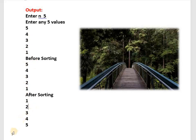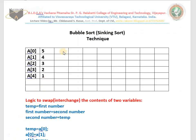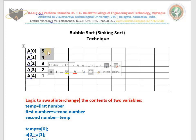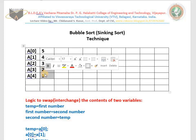How to arrange these values in ascending order? We use bubble sort technique — let me explain the technique first. Assume you entered 5 values: 5, 4, 3, 2, 1, stored in array positions a[0] through a[4]. We compare two consecutive values. First I compare 5 and 4, then these two, then these two, then these two — consecutive values I compare.